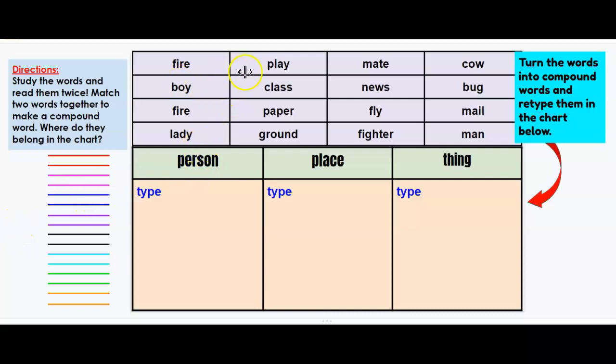On slide 3, you will study the list of words inside this purple table. You will read the words to yourself and then match words together to make a compound word. So here are the directions: study the words and read them twice, match two words together to make a compound word, where do they belong on the chart?